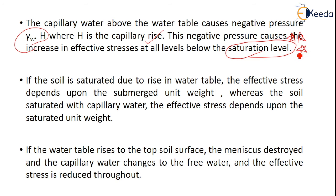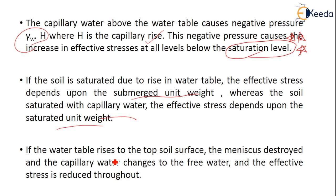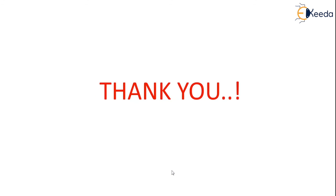If soil is saturated due to the rise in water table, effective stress depends on the submerged unit weight gamma'. Whereas for soil saturated with capillary water, the effective stress depends mainly on the saturated unit weight. But if the water table rises to the top soil surface, the meniscus is destroyed, the capillary water changes to free water, and the effective stress is reduced throughout the section. Thank you.